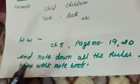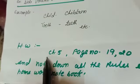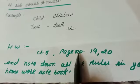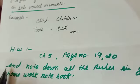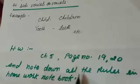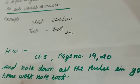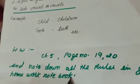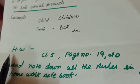Now, homework time. Chapter number 5, page number 19–20. And note down all the rules in your homework notebook. Again, I am explaining the homework: Chapter number 5, page number 19–20, and note down all the rules in your homework notebook. Thank you.